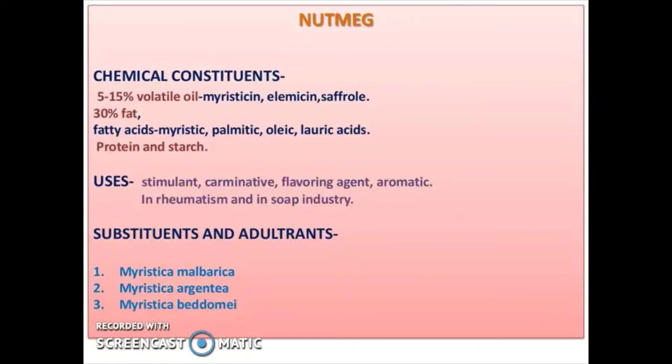Chemical constituents: 5 to 15% volatile oil — myristicin, elemicin, safrole — and 30% fat. Fatty acids: myristic, palmitic, oleic, and lauric acids. It also contains proteins and starch. Nutmeg is used as a stimulant, carminative, flavoring agent, aromatic agent, in rheumatism, and in the soap industry. Substitutes and adulterants are Myristica malabarica, Myristica argentea, and Myristica beddomei.